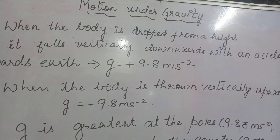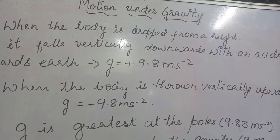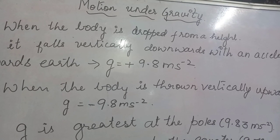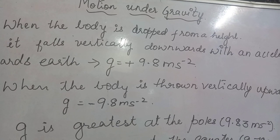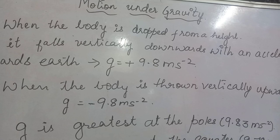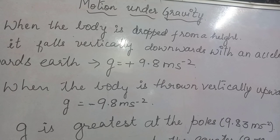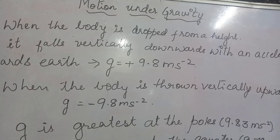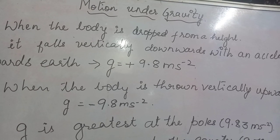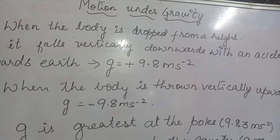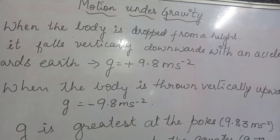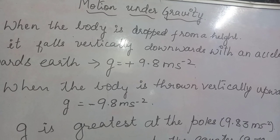When the body is thrown towards the earth, g is taken as positive, 9.8 meter per second square. Numerically, if a body is made to drop from a height vertically downward, you take g as plus 9.8 meter per second square. If a body is thrown upward, you take it as minus 9.8 meter per second square. This you have to remember.